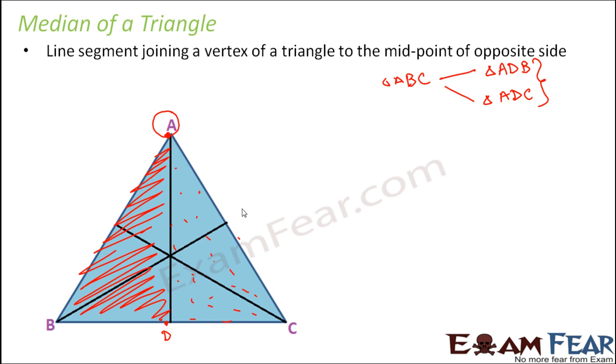As you can see here, so AD, let's call this E, let's call this F. Therefore we can say that AD, BE, and CF, these are the medians for this triangle. So these are different medians for the different vertices.